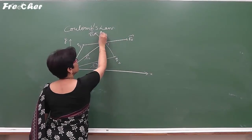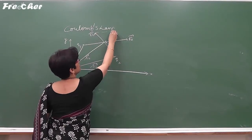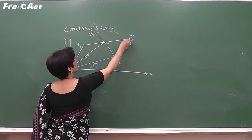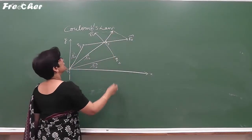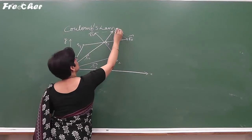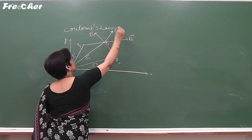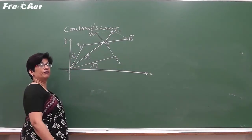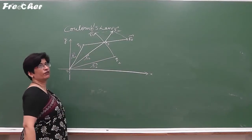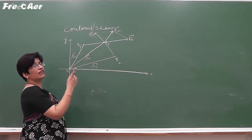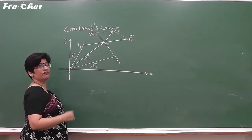To find the resultant, we complete the parallelogram using F₀₁ and F₀₂ as adjacent sides. The diagonal of this parallelogram gives the resultant force. This resultant is the total force on the charge due to Q1 and Q2. This will be more clear if we consider one more example.